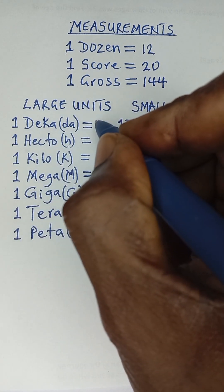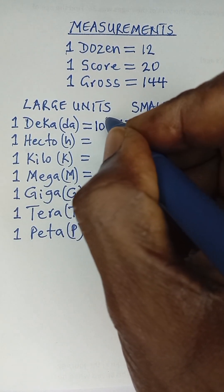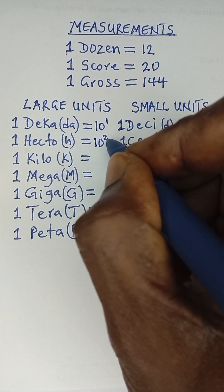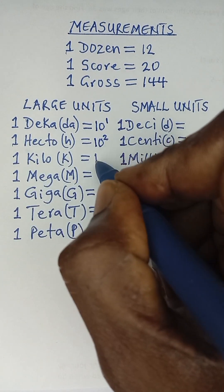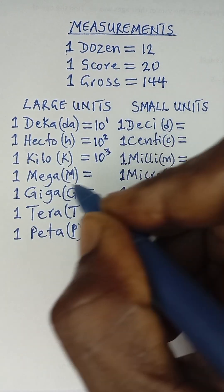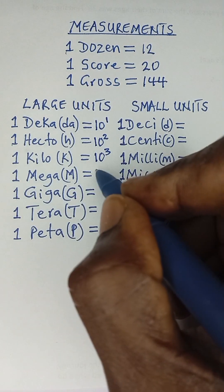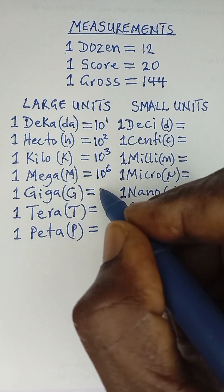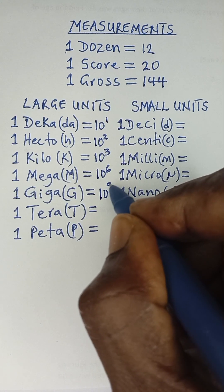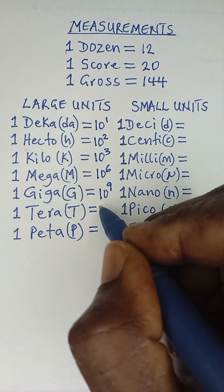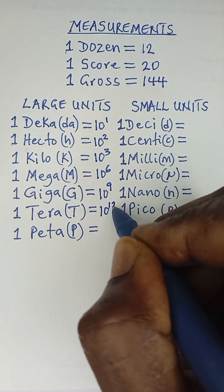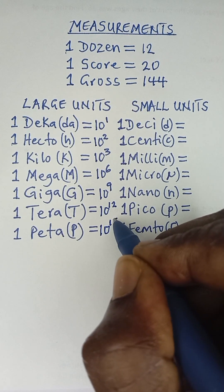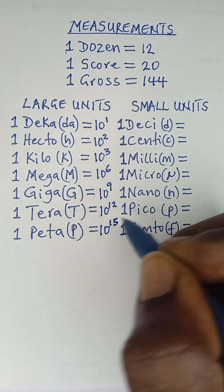1 deca is 10 raised power 1, 1 hectare is 10 raised power 2, 1 kilo is 10 raised power 3, 1 mega is 10 raised power 6, 1 giga is 10 raised power 9, 1 tera is 10 raised power 12, and 1 peta is 10 raised power 15.